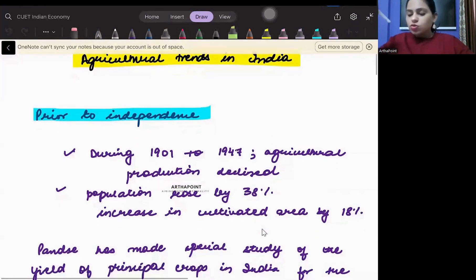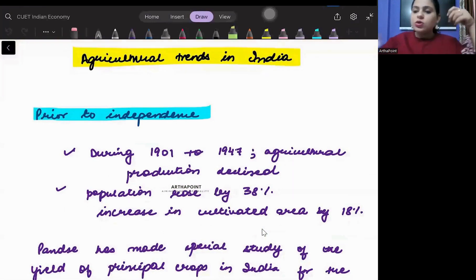Throughout, one thing that has remained common in the agricultural sector has been the fact that it has been a dominant sector in India. Actually, for any underdeveloped country, agriculture will play a very important role.